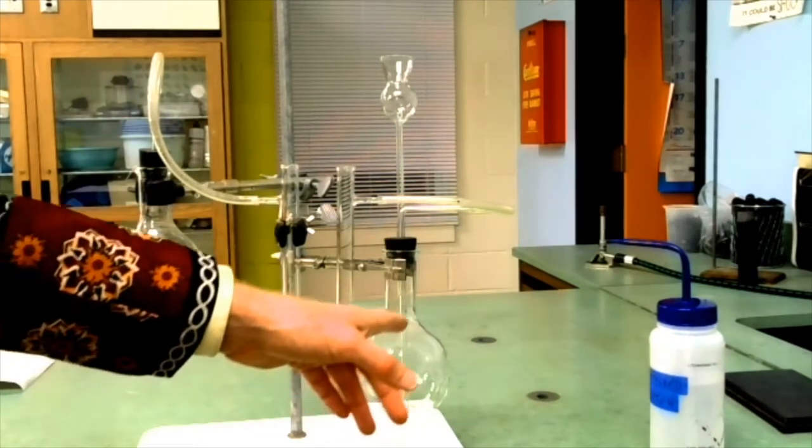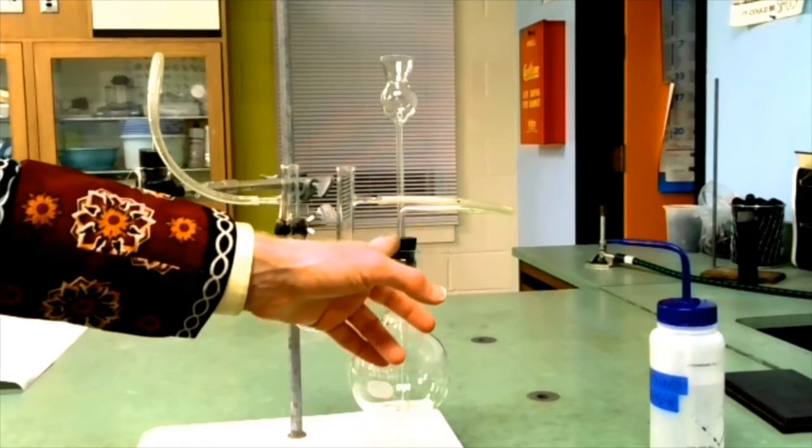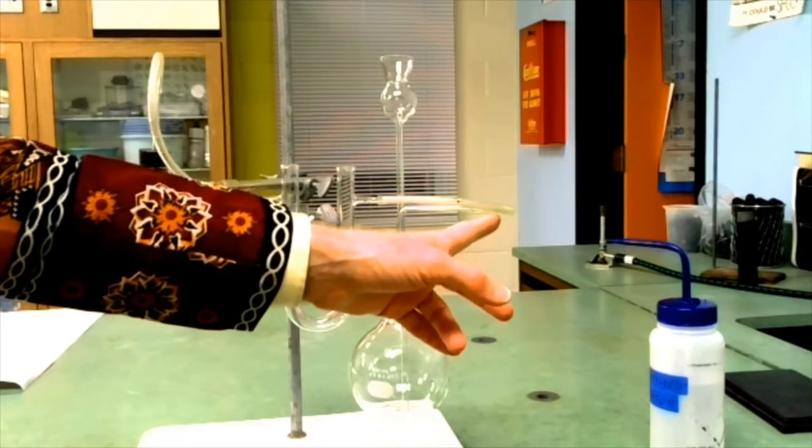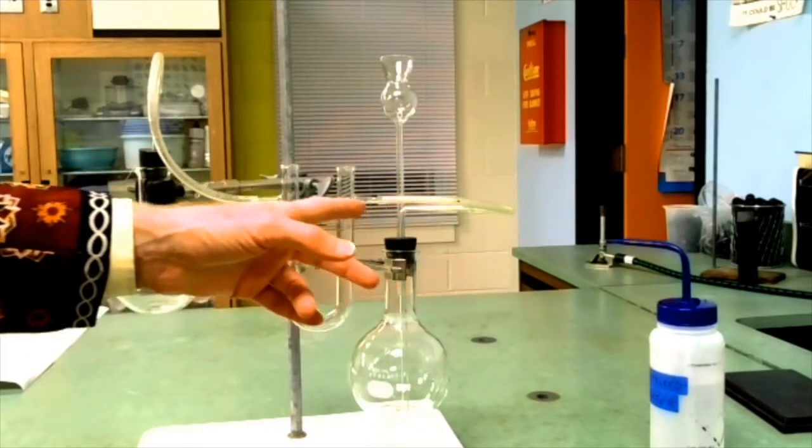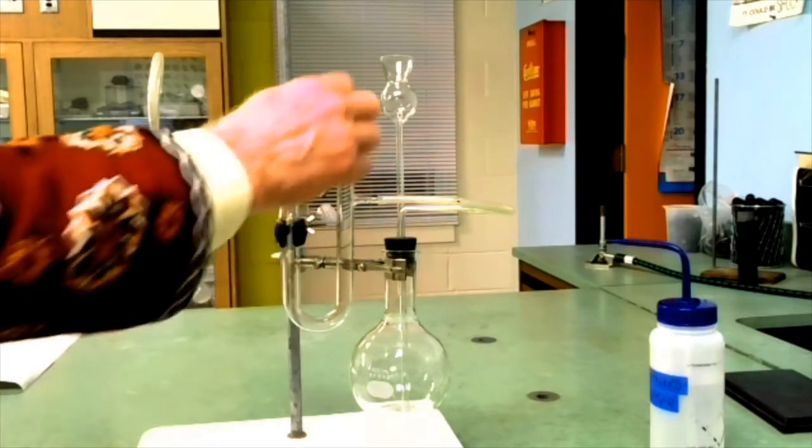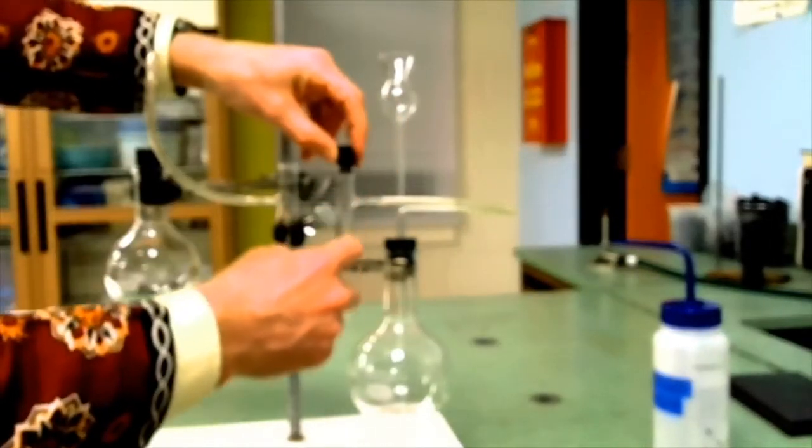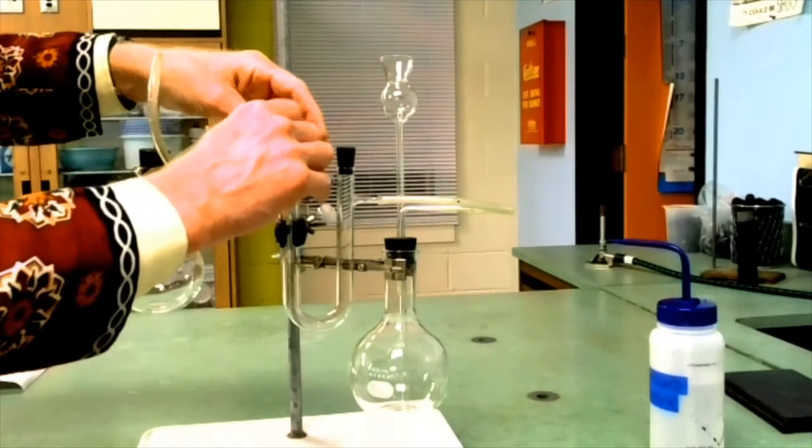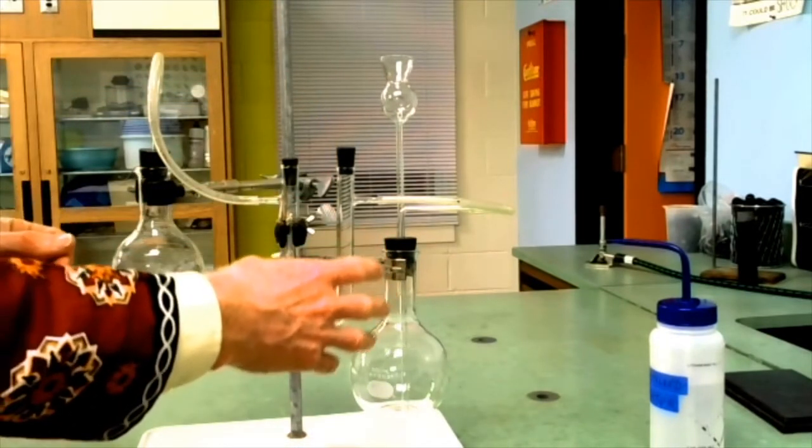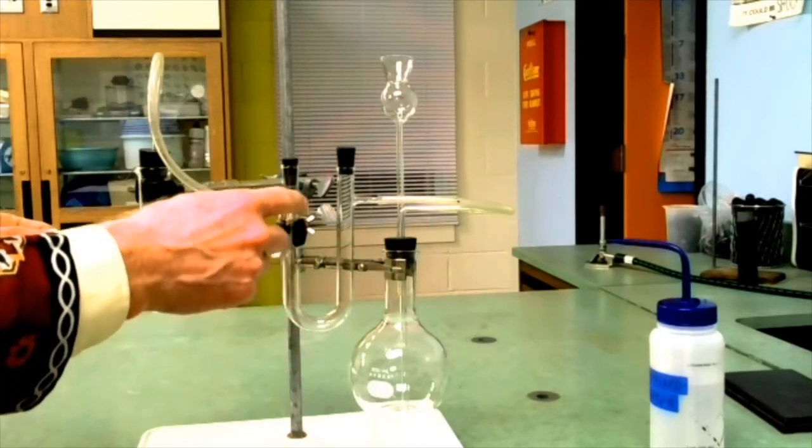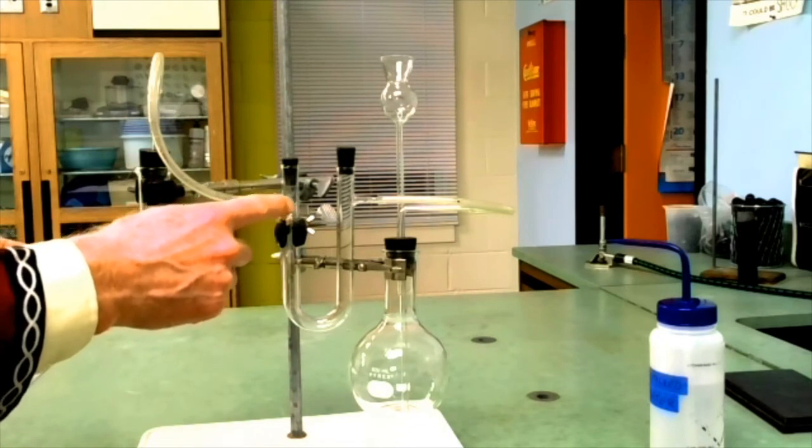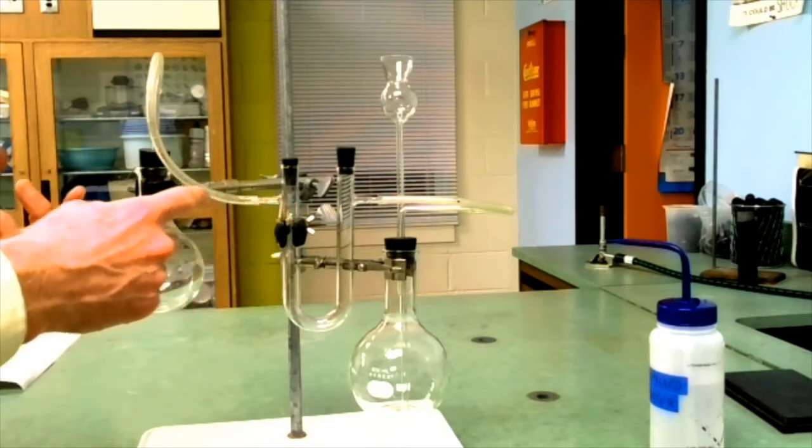The carbon dioxide that's produced will come out this tube and then go into the drying tube. It will go through the calcium chloride, which will take the water vapor out. The water vapor will stick to the calcium chloride so that the carbon dioxide that comes out the drying tube is not going to have water vapor in it.